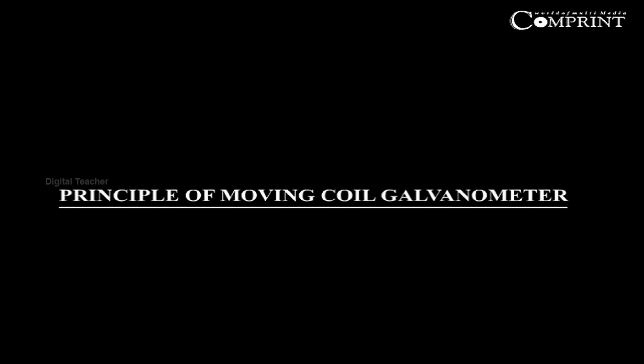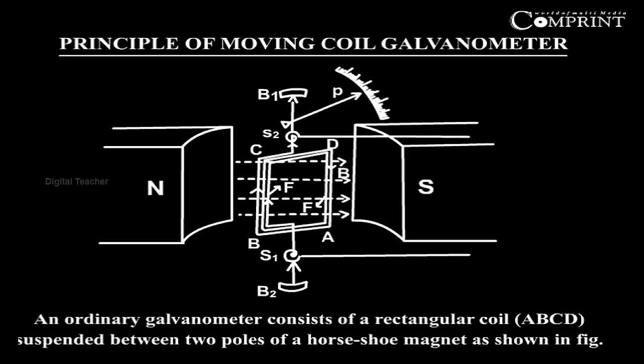Principle of a Moving Coil Galvanometer. An ordinary galvanometer consists of a rectangular coil ABCD suspended between the two poles of a horseshoe magnet as shown in the figure.